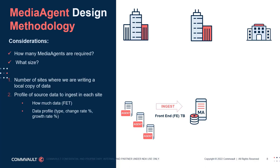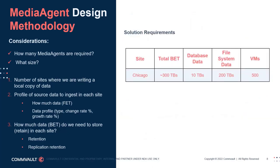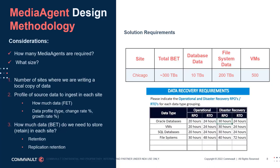These figures are not a sizing metric of the media agents themselves but are used in step 3: calculate the back-end terabytes to be stored in order to meet the retention and replication retention requirements for each site. Step 4: match the back-end terabytes to the appropriate media agent grid or grids to meet the solution requirements. Always avoid situations where this aspect of a solution is undersized, as that will inevitably cause problems — for example, having too many deduplication databases on a single media agent could cause performance bottlenecks.